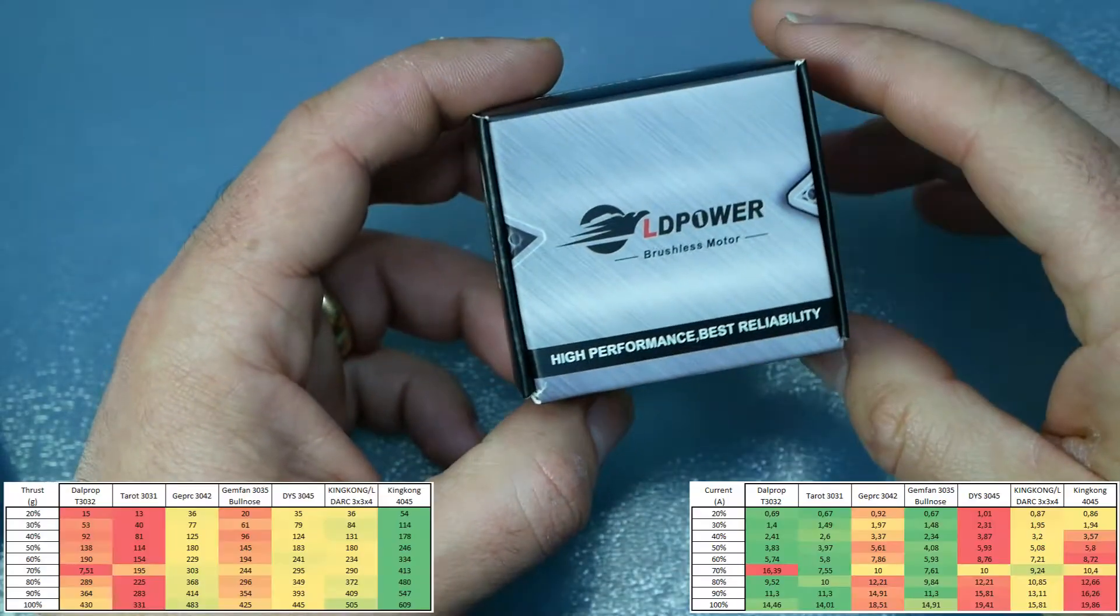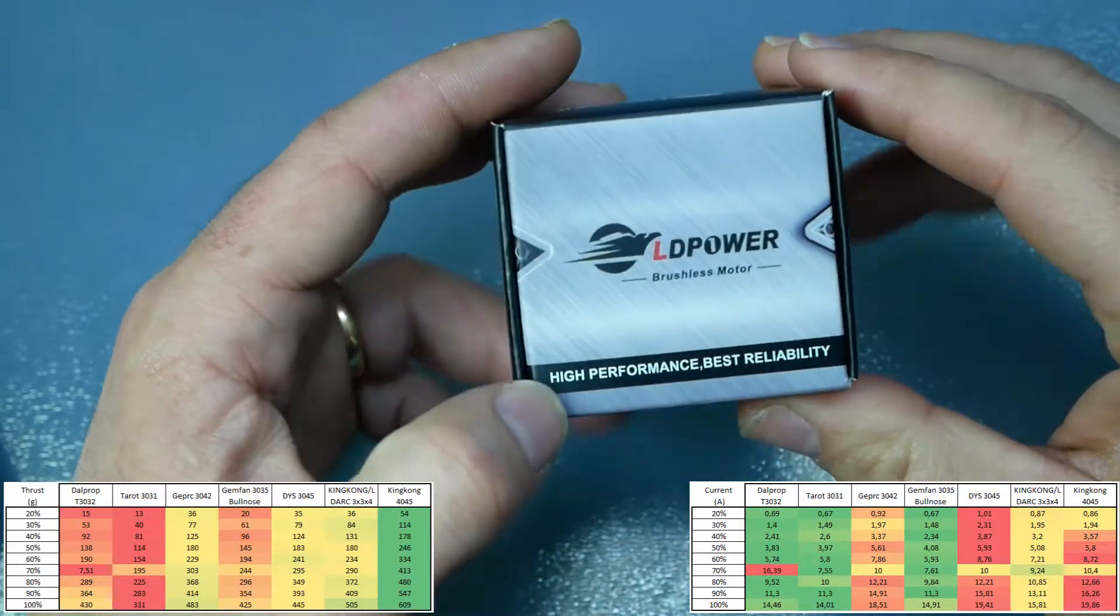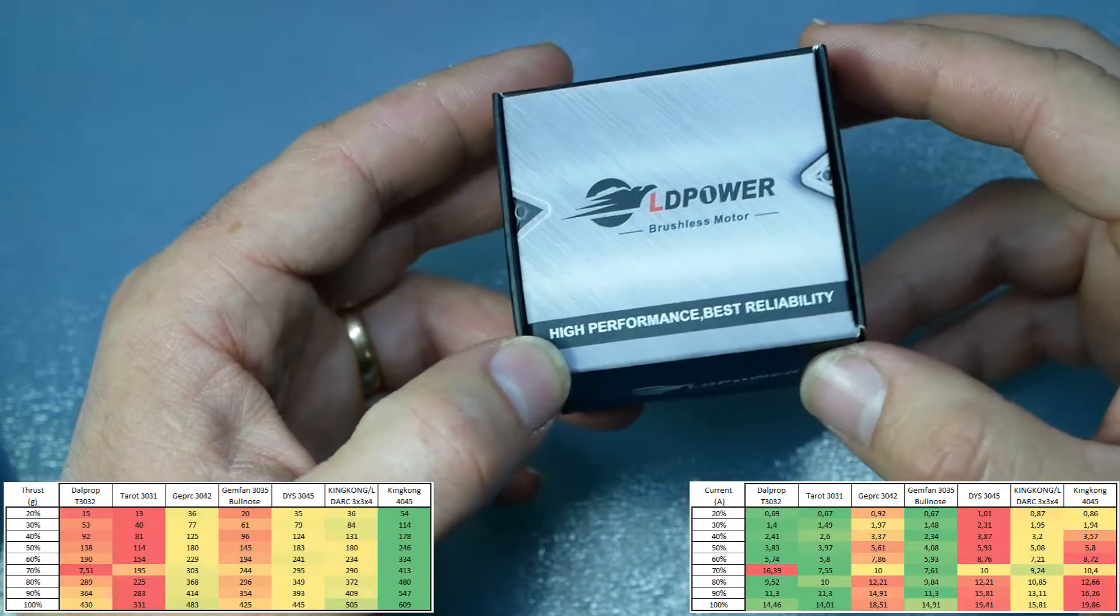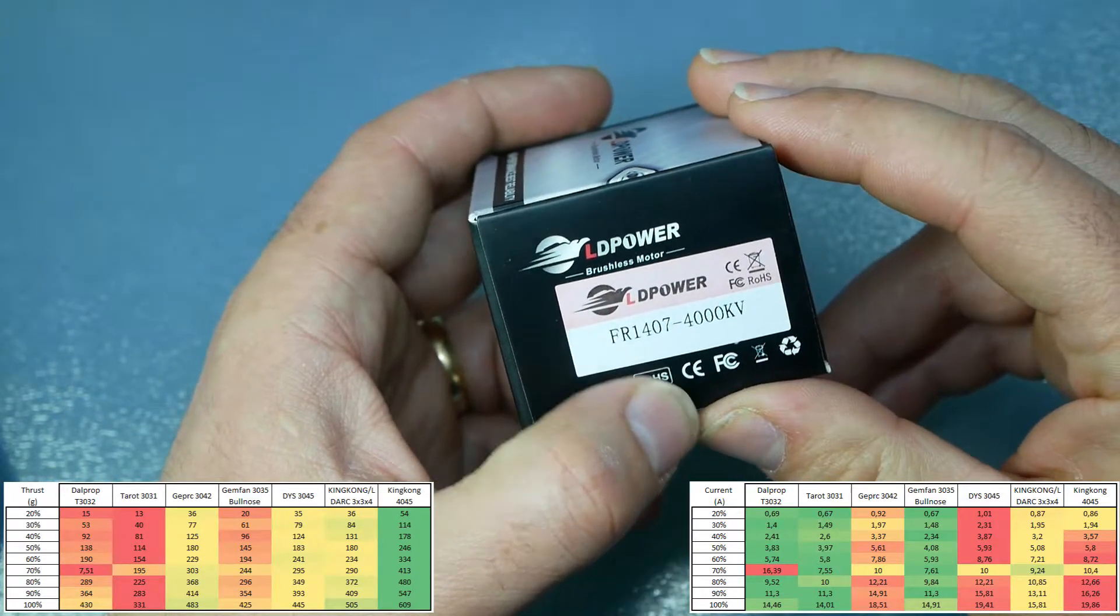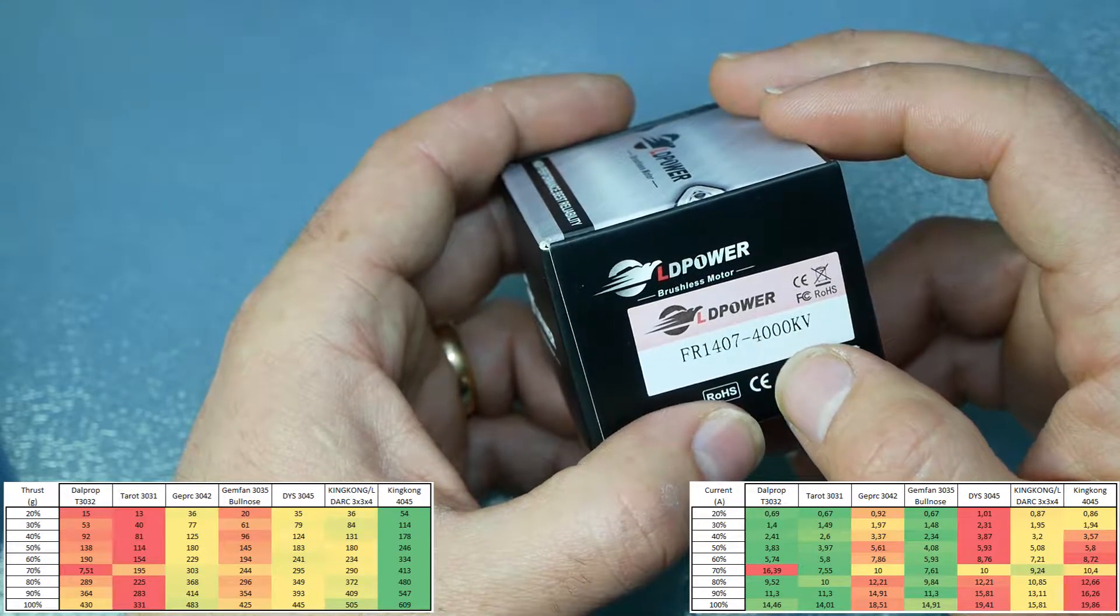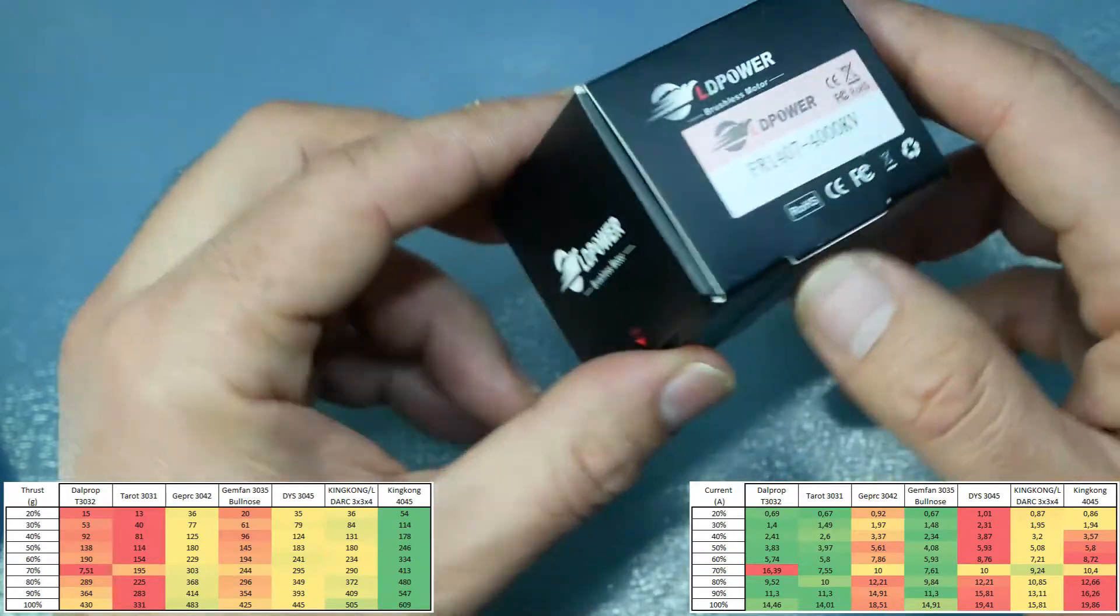Welcome to RCBest Reviews. Today we bring you another motor from LD Power. This time is a brushless motor FR-1407-400KV motor.